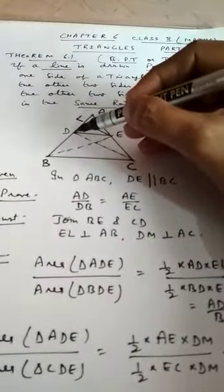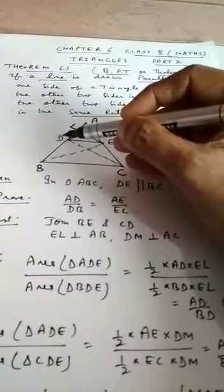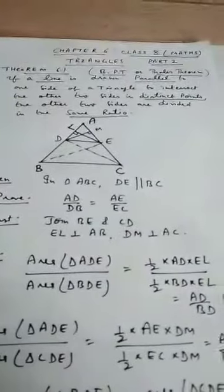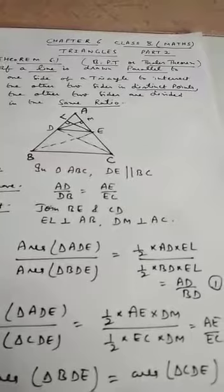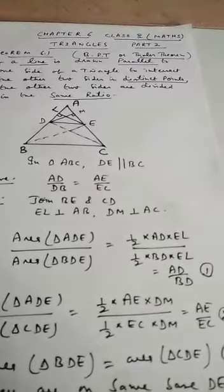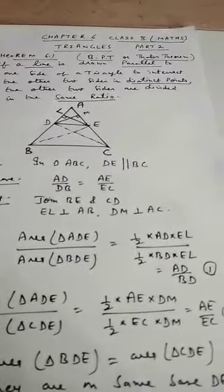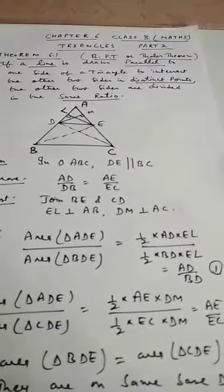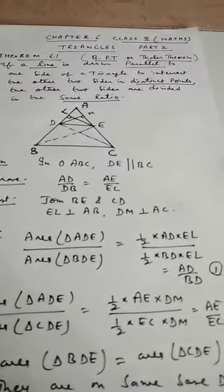So area of ADE will be half into AD into EL. Similarly, for area of triangle BDE, BD is the base and EL is the altitude. So the ratio of area of ADE to area of BDE is half into AD into EL divided by half into BD into EL. After cancellation, it becomes AD by BD.